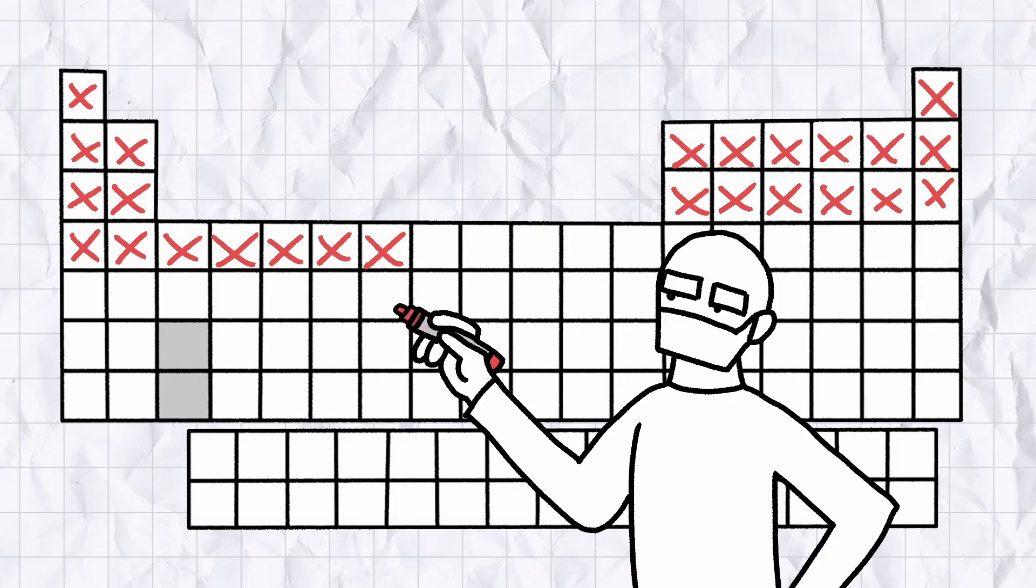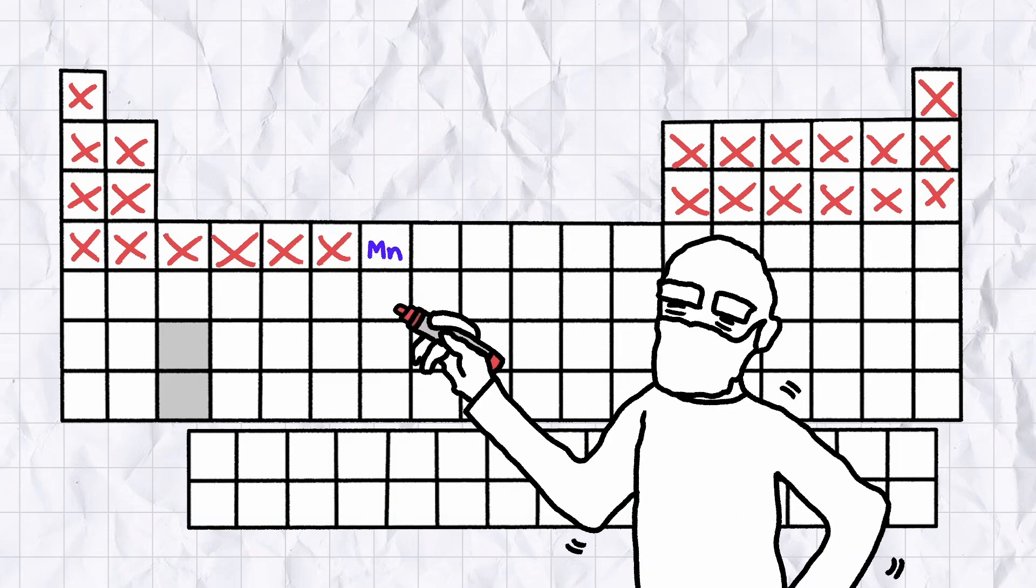As both the episode count and creator of Tate Facts enter the early stages of a quarter-life crisis, we turn to element 25 of the periodic table, manganese.